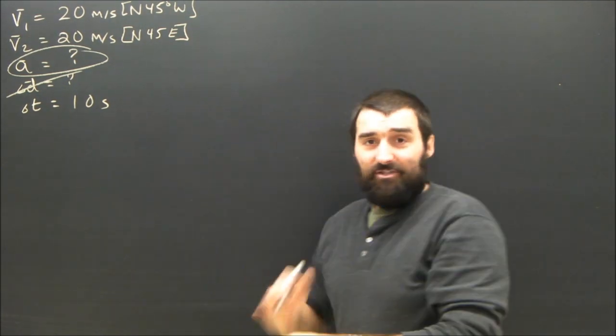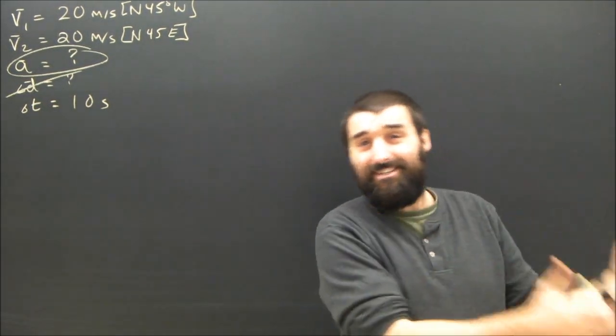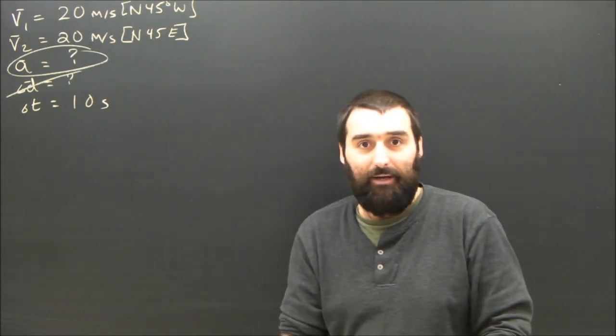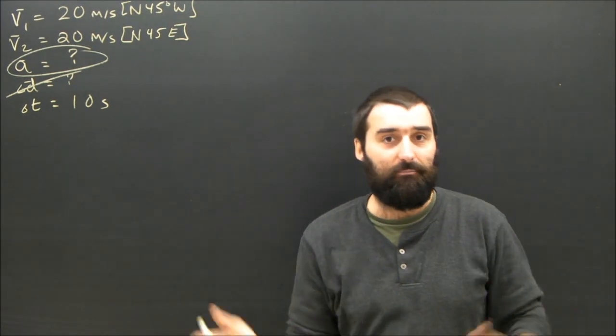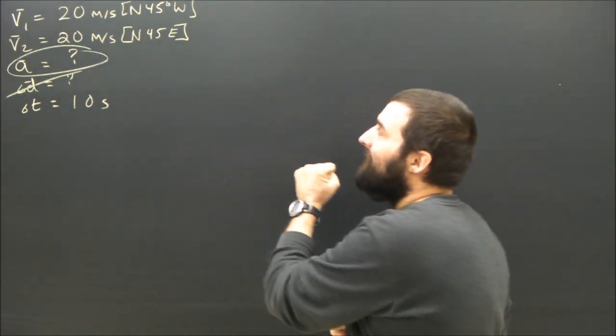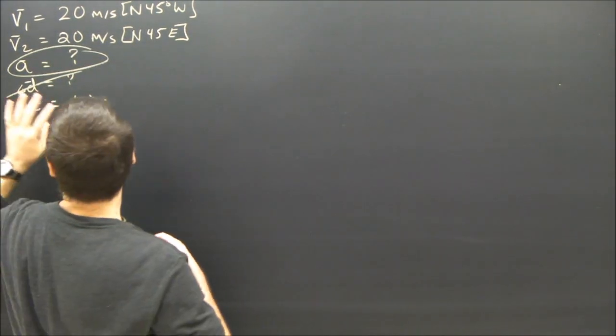It happens to be in two dimensions, northeast, northwest. We're going to have to use vectors in a more complicated way than we did before when it was just up or down, left or right, plus or minus. Now we're going to have triangles, Pythagorean theorems, components, all kinds of other fun things. But fundamentally the problem hasn't changed. I'm still going to pick the formula that doesn't have D in it.